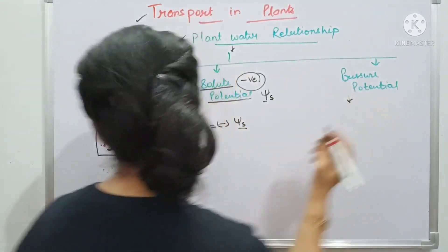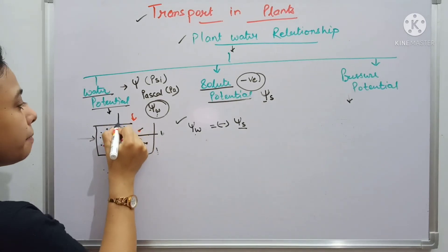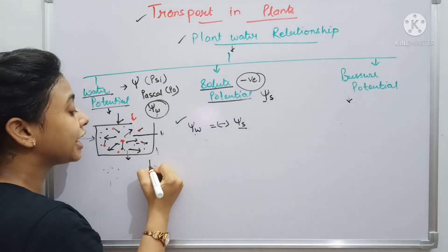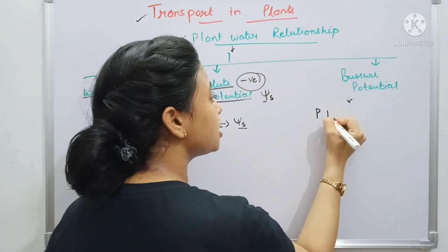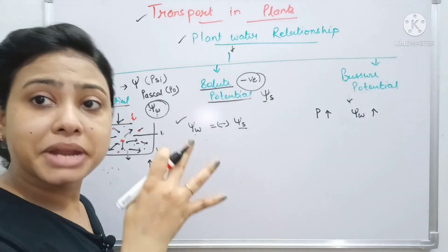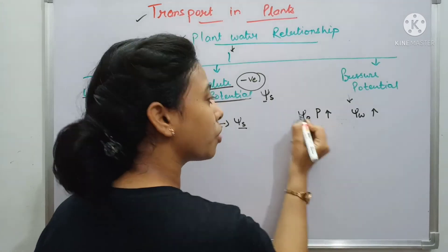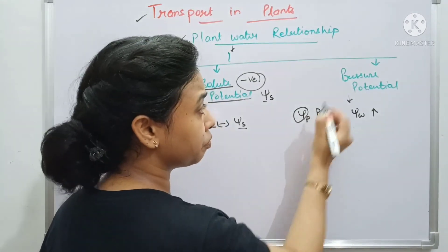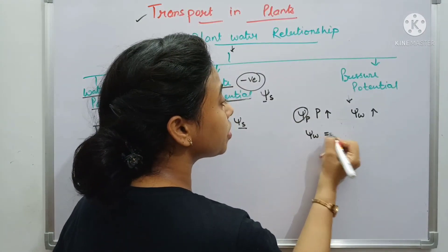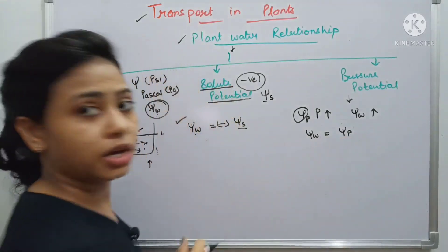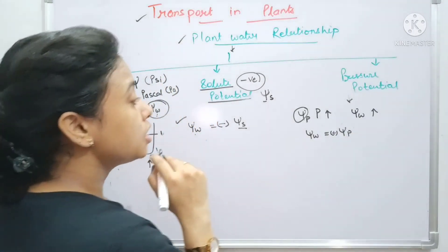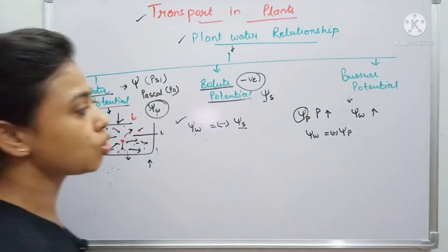Now for pressure potential: if pressure is applied, the kinetic energy of the water increases and so water potential increases. This is called pressure potential, denoted ψp. At atmospheric pressure, pressure potential and water potential are equal, and the pressure potential carries a positive sign.